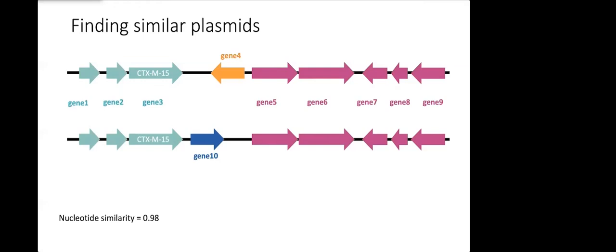Then we calculated out of all the possible gene symbols across these two plasmids how many did they have in common and that gave us our gene similarity score. For this example here the gene similarity score for these two plasmids is 0.8.